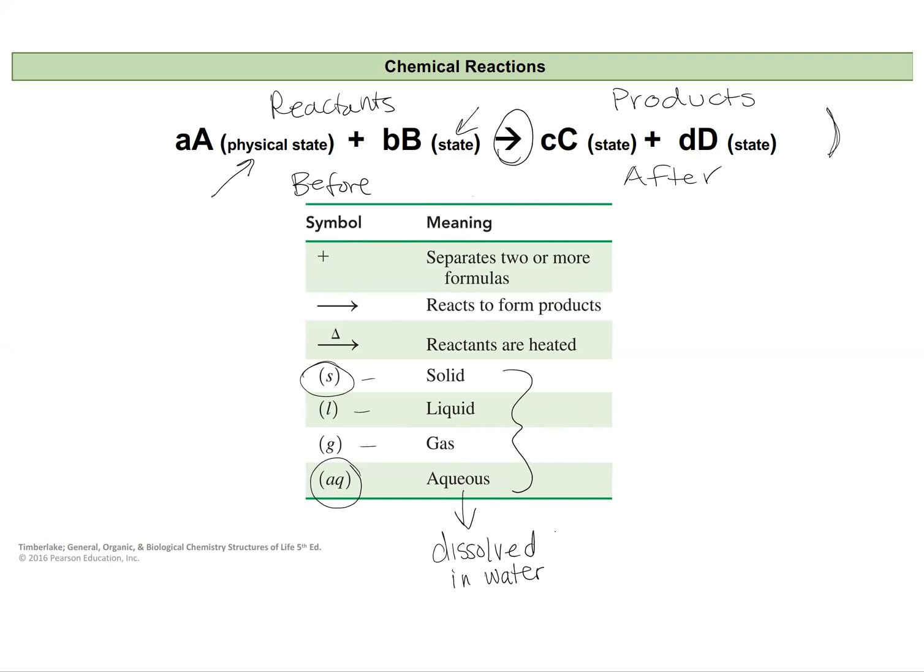So besides our states, we're also going to have our coefficients. I'm going to highlight these green. They're the lowercase letters referring to the variable for the chemical. And these are really going to give us the ratio that our reactants combine to form our products.